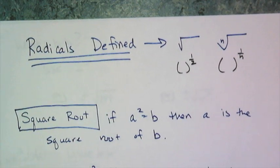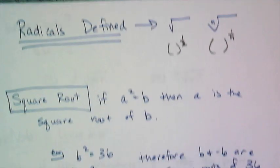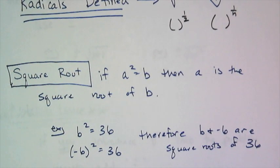So the definition of a square root is this: if a squared equals b, then a is the square root of b. So case in point, 6 squared equals 36, and negative 6 squared equals 36, therefore 6 and negative 6 are both square roots of 36.